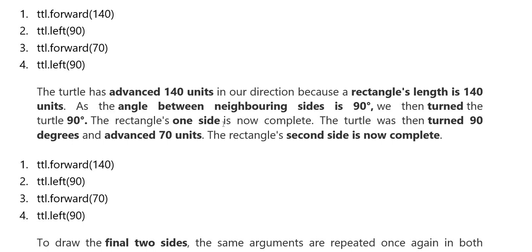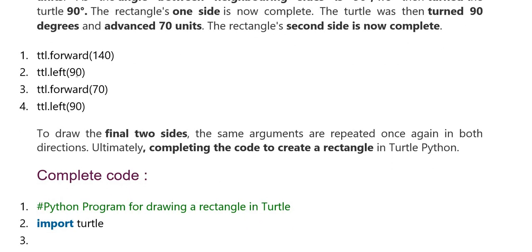Rectangle one side is now complete. The turtle then turned 90 degrees and advanced 70 units. The rectangle second side is now complete. Turtle forward left, forward left. Here, we draw the final two sides, which are the same arguments repeated once again in both directions. Ultimately,